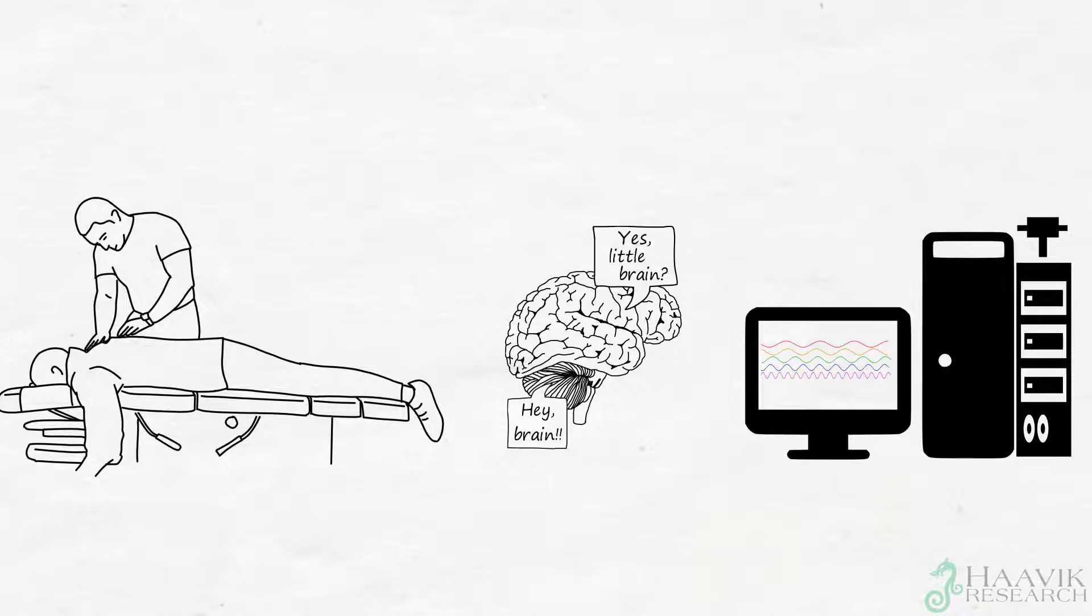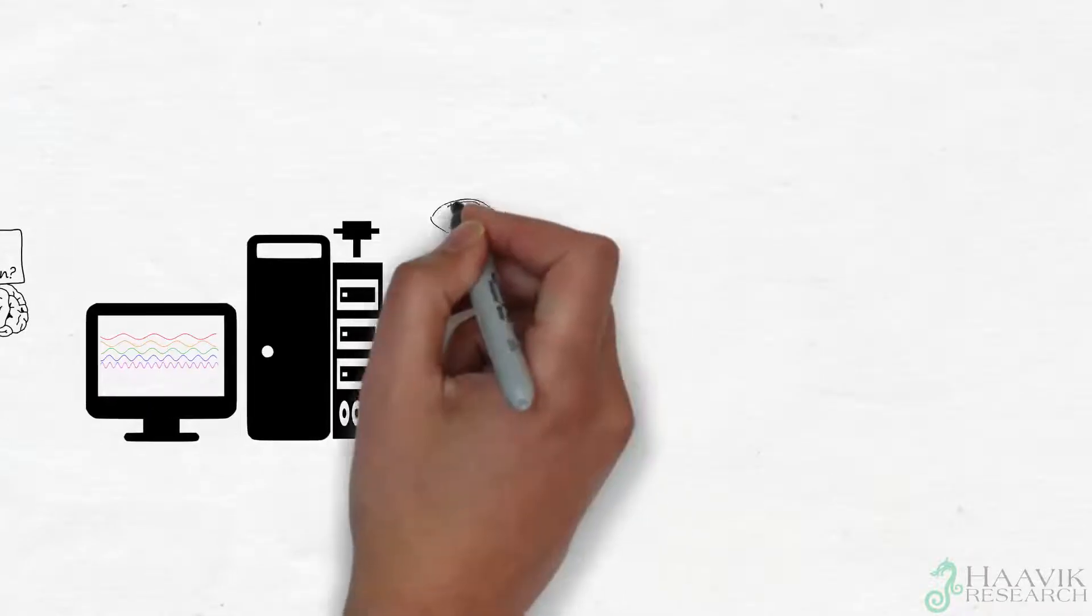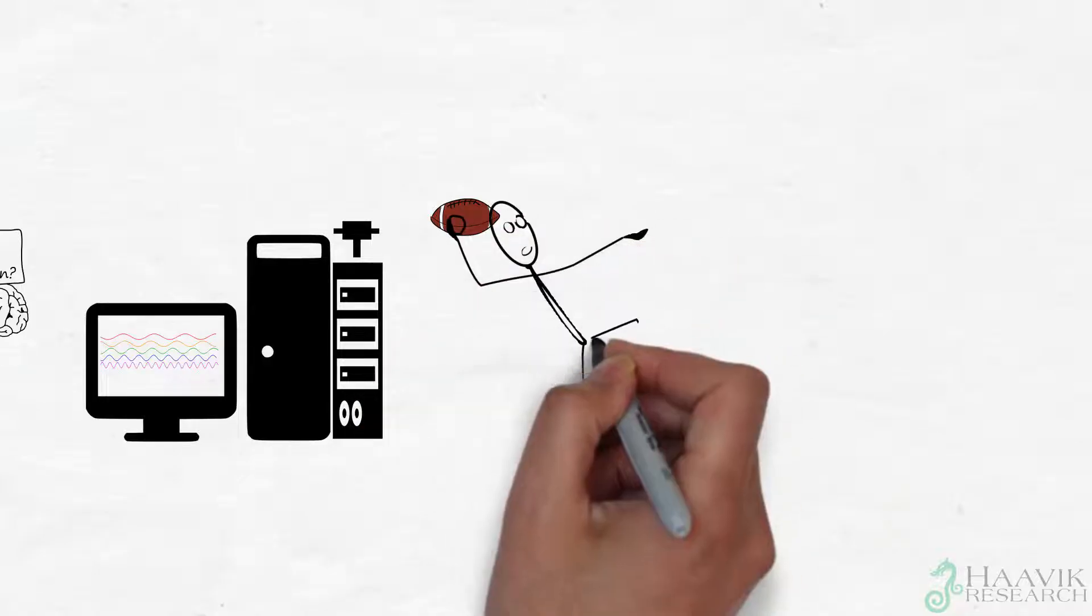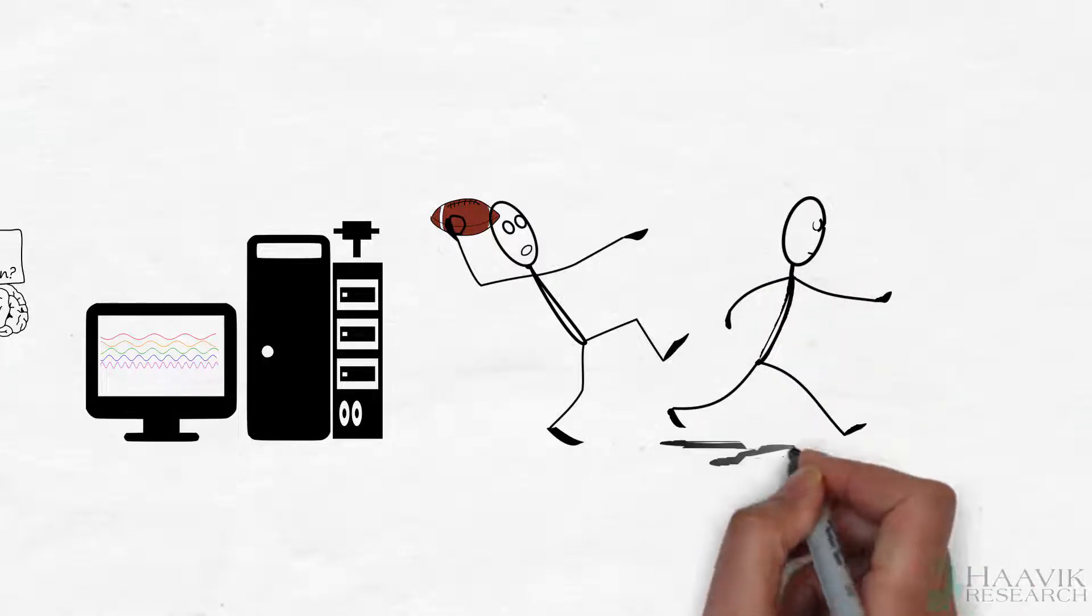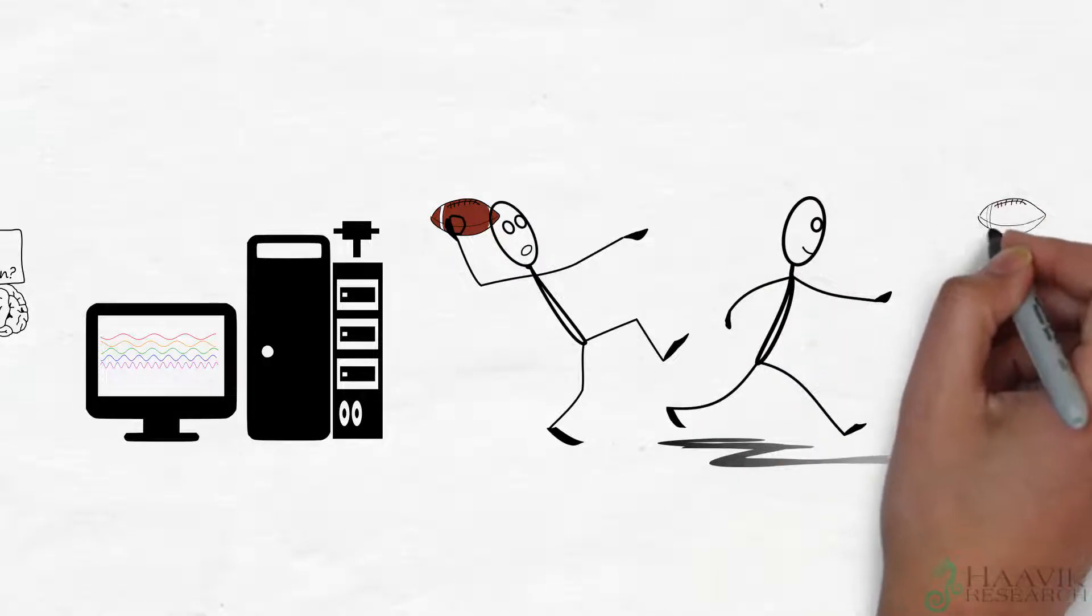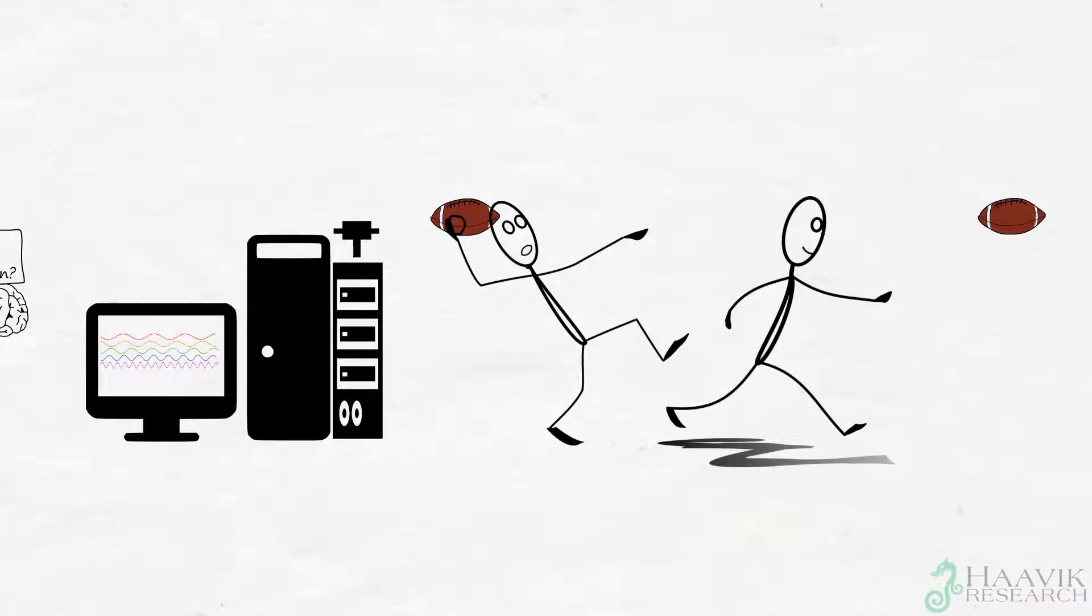They did not stop here, and also measured the way the brain controls over-arm throwing movements, because it's well known that the cerebellum is very important for controlling such movements. Throwing is a skill which is highly dependent on intact cerebellar function.